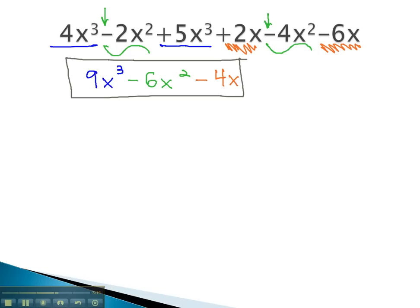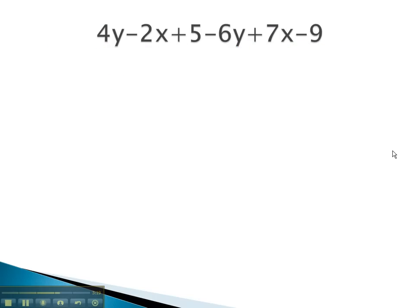Let's try another problem where we combine like terms to simplify the expression. Here, we start with a 4y. The term like it is the -6y. 4y minus 6y is -2y, combining the numbers or coefficients in front.